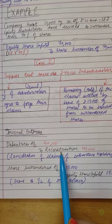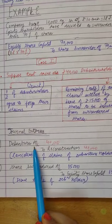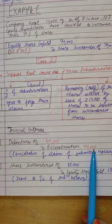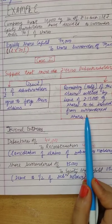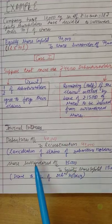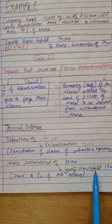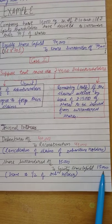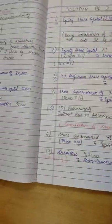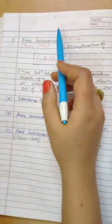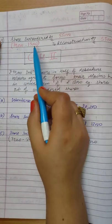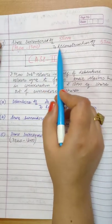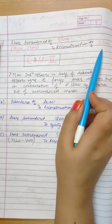We put it in reconstruction to cancel it — Debenture Account Rs.40,000 to Reconstruction Account Rs.40,000. Next journal entry: from the share surrender account we issue Rs.15,000 equity shares — Share Surrender Account Dr. to Equity Share Capital Rs.15,000. Now, we had put Rs.70,000 in share surrender, but used only Rs.15,000. So the balance of Rs.55,000 is transferred to Reconstruction Account. Entry: Share Surrender Account to Reconstruction Account, Rs.55,000.